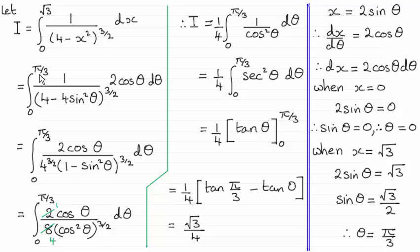So I've changed the limits here and made the substitution. So it's just a question now of cleaning this up. I've pulled out 4 as a common factor in the denominator here, but because it's all to the power 3 over 2 we end up with 4 to the power 3 over 2 multiplied with the 1 minus sine squared theta all to the power 3 over 2.